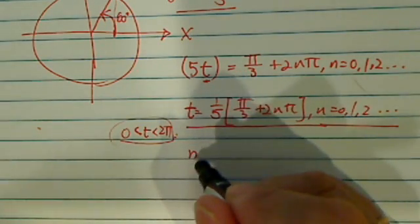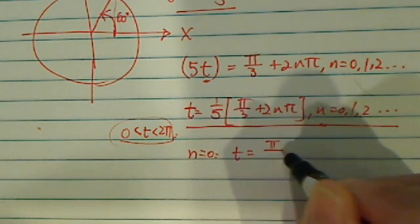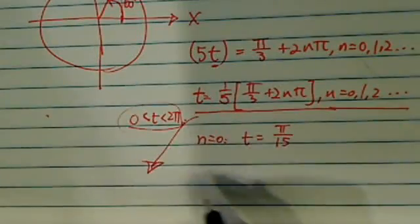Okay, so when n equal to 0, we have t equal to pi over 15. As a matter of fact, let's write this one in a better form here.